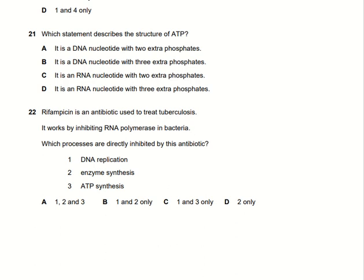Assalamu alaikum. In this lecture we will cover the remaining MCQs of question paper number 12, appearing in June 2022. Which statement is correct about the structure of ATP (adenosine triphosphate)? As we know, ATP has ribose sugar, so we can say it is an RNA nucleotide with one phosphate already present. As it is triphosphate, it has 2 extra phosphates. So option C is the right answer.